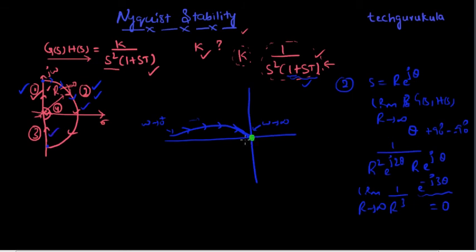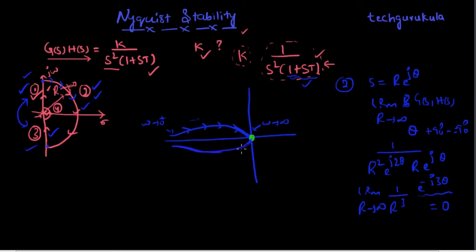Coming to section 3, the plot looks exactly like a mirror image of section 1, because omega is changed only with respect to sign — section 1 had positive omega and section 3 has negative omega. So we get an exact mirror image. The plot goes to infinity, and the directions are accordingly.